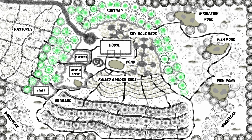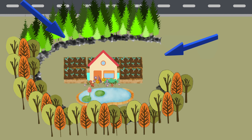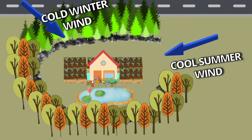Next, we've got sun traps. This is for those who have chills in winter when stepping outside their home. You can create a windbreak in the shape of a horseshoe around your house, your gardens, animal housing — wherever you need that warmer area. Next, we've got wind tunnels. You can create a passageway for wind that you want — for example, for a cool summer breeze around your home.